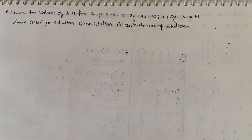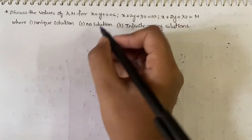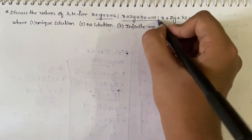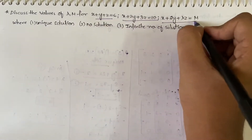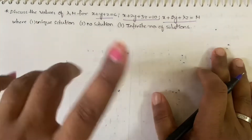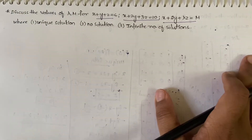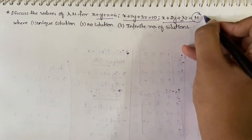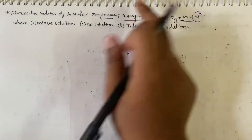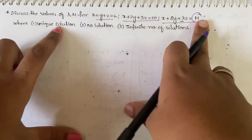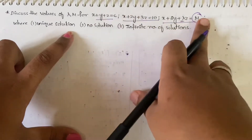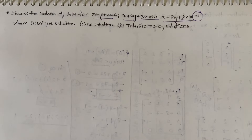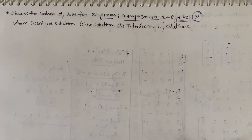The three equations we have are: x + y + z = 6, x + 2y + 3z = 10, and x + 2y + λz = μ. We have to find the values of λ and mu for three cases: when the system has a unique solution, no solution, and infinite number of solutions.